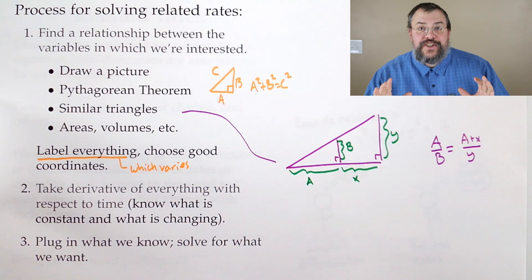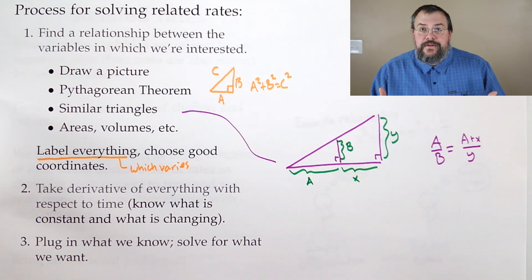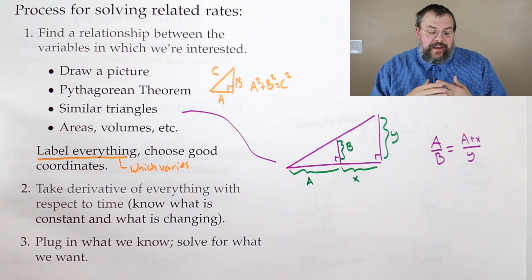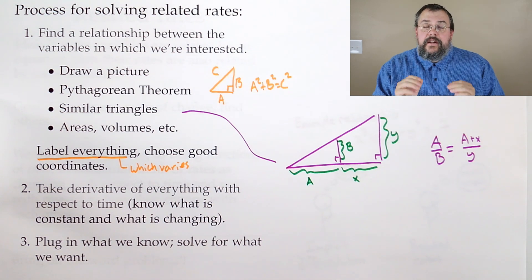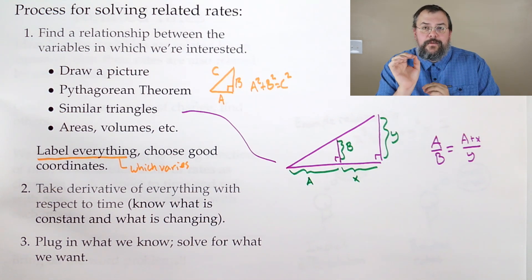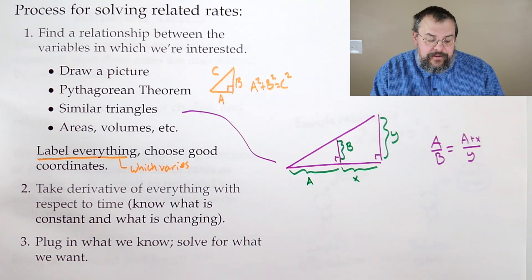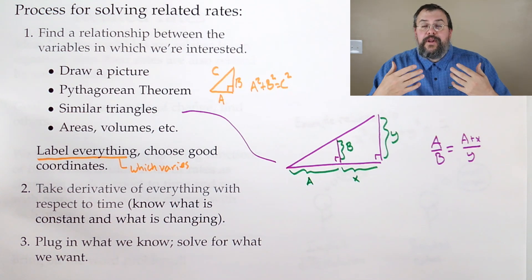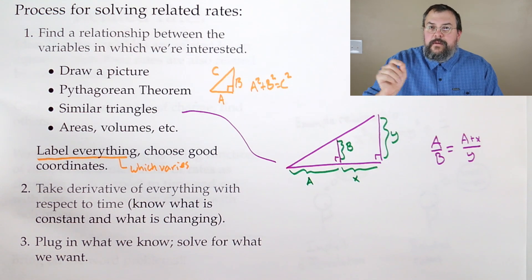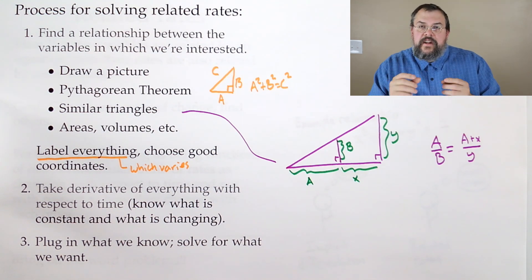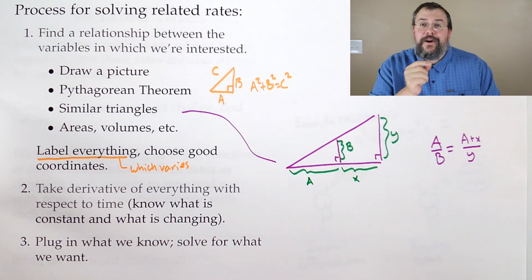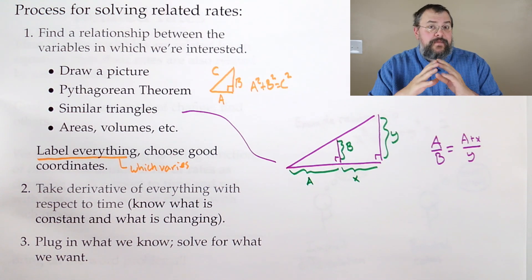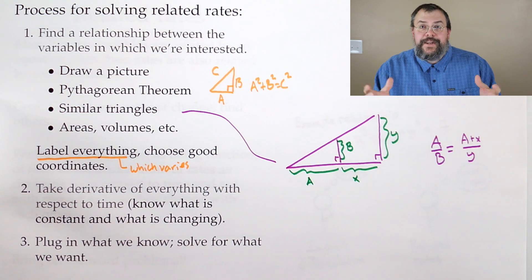We've found a relationship — we've successfully completed step one. Step two says: once you have your relationship, take the derivative of everything with respect to that parameter — again, best to think of as time. This is where it's important to distinguish what's a constant, meaning what's fixed and doesn't change, and what's a variable. Anything which is a variable has a derivative, so you've got to keep track of those things. And the last thing is to plug in everything that you know. Oftentimes you'll know the value of certain variables and rates, and you'll know everything except one piece of information. Find out what that one piece is, and solve for what you want. So that's it: find your relationship, take the derivative of everything with respect to your parameter, plug in what you know, and solve for what you don't.